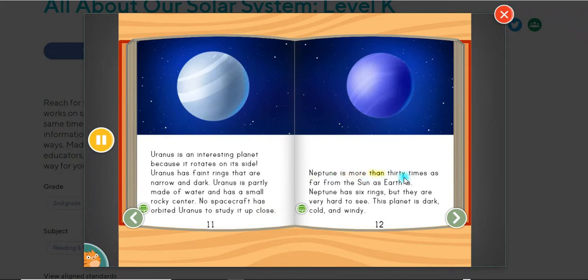Neptune is more than 30 times as far from the Sun as Earth is. Neptune has six rings, but they are very hard to see. This planet is dark, cold, and windy.